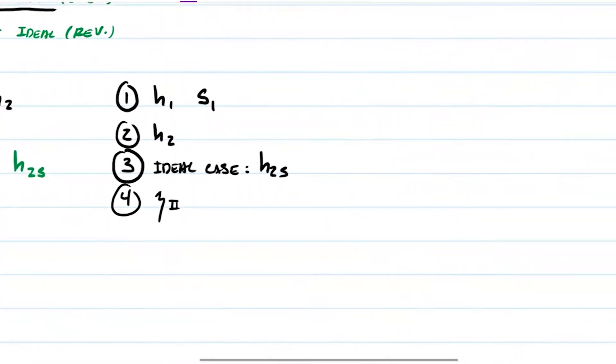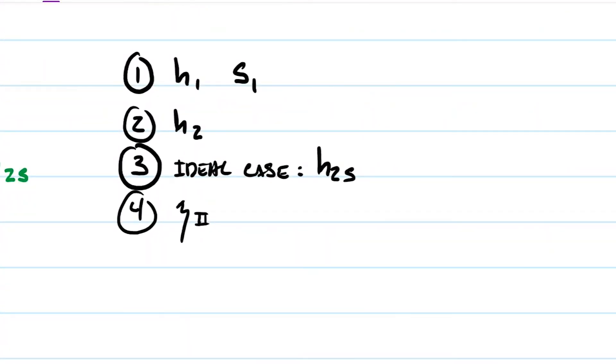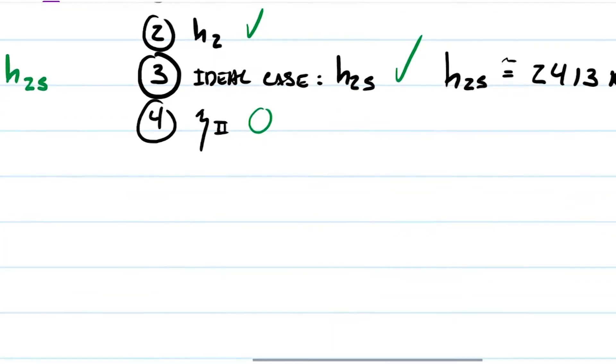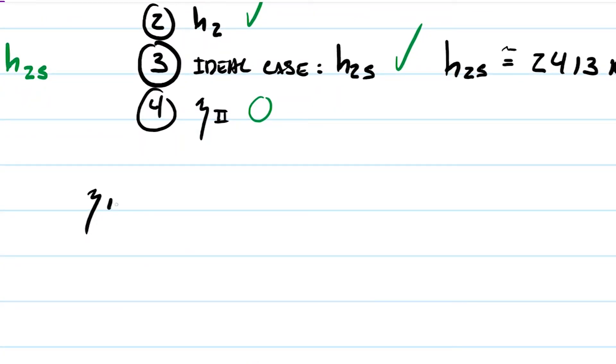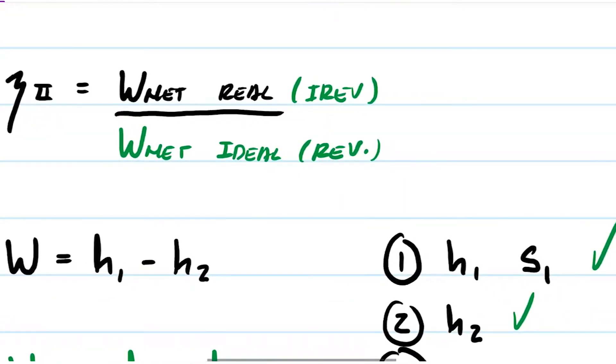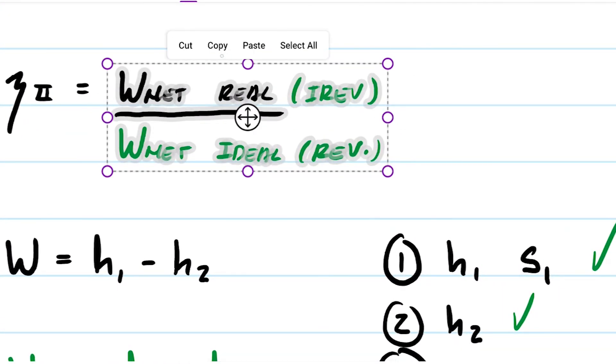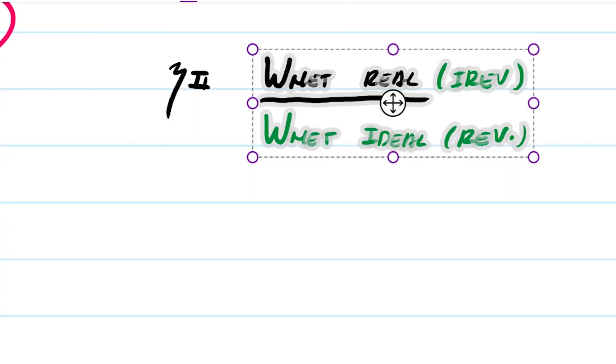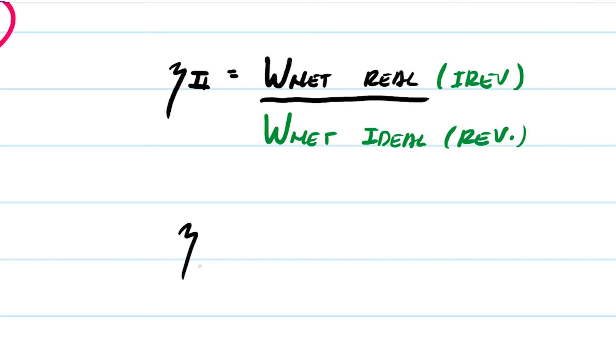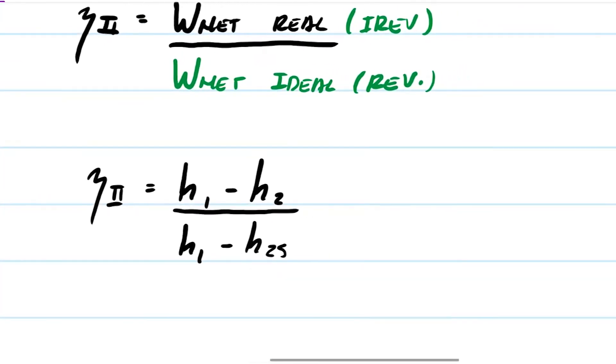We went overhead and grabbed the enthalpy and entropy for state one. We grabbed the enthalpy for state two. Those were easy. Then we had to explore the ideal case when we ended up finding it's a saturated mixture. But eventually we were able to grab the enthalpy for this case here. And now all we're left to do is find the efficiency. The efficiency is going to be the network output real divided by the network output ideal case.